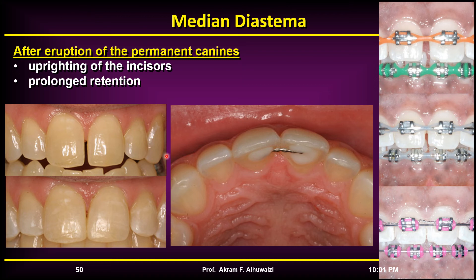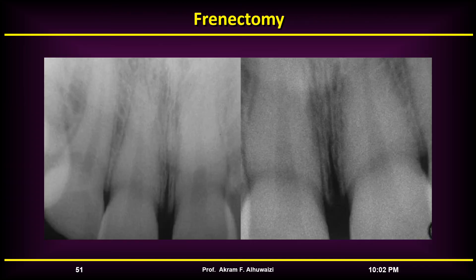If the diastema is small, composite build-ups or veneers can be done instead of orthodontic treatment. A U- or V-shaped radiographic appearance of the interproximal bone between the maxillary central incisors is a diagnostic key of a persistent midline diastema. The patient should be informed before treatment of the need for long-term retention, with lingual bonding of the central incisors after treatment to prevent recurrence of the diastema.